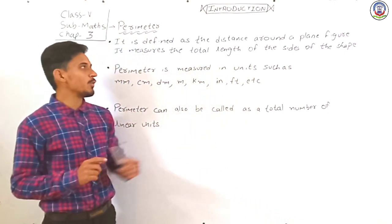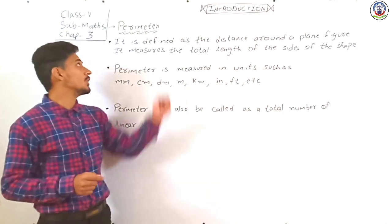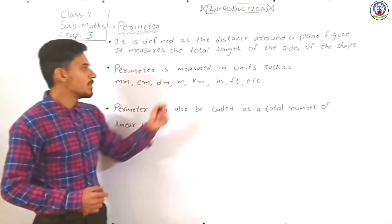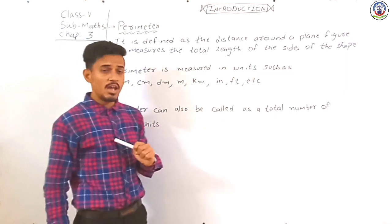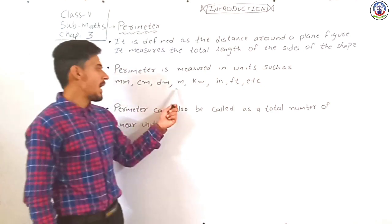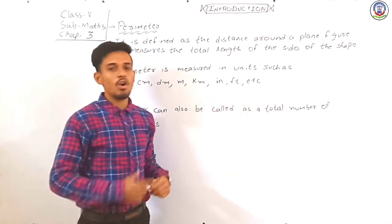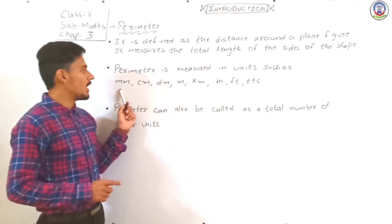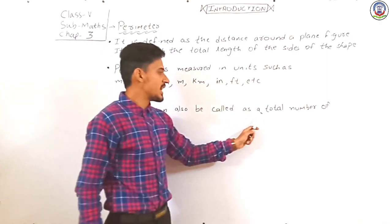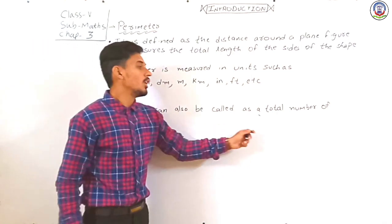The distance is measured in units such as mm, cm, km, feet, and other units. Perimeter can also be called the total number of linear units.